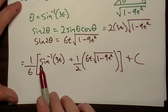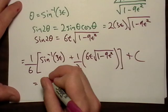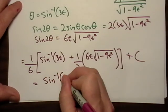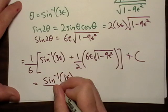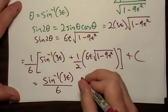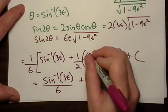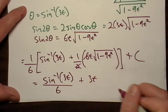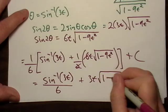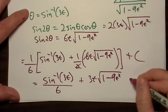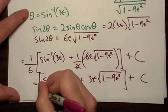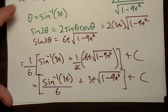So let's just do that right now. So we've got 1 sixth. Theta was equal to inverse sine 3t. And then we're going to have 1 half times 6t square root of 1 minus 9t squared plus c. So let's see if we can't simplify this a little more. So we're going to end up with sine inverse 3t over 6 plus 3t square root of 1 minus 9t squared plus c. I guess we'll go ahead and put it in brackets just to make it a little neater.